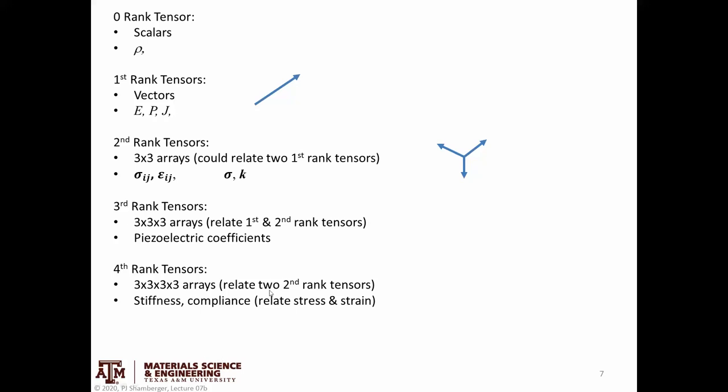A fourth rank tensor, something that is going to relate two second-rank tensors. Stiffness and compliance are examples. So now we have 81 different elements.